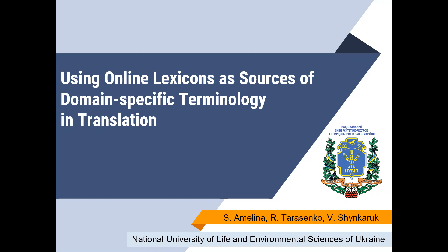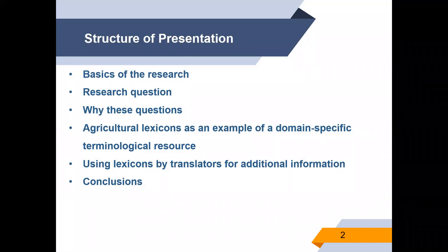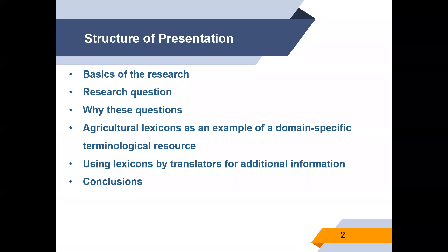The term lexicon comes from the ancient Greek for dictionary and is a reference book or dictionary in the broad sense. This term has sometimes previously been used synonymously with linguistic vocabulary. In the modern sense, a lexicon is mainly seen as a factual reference book. A distinction is made between a lexicon in the narrow sense and an encyclopedia depending on its volume. From a lexicographic perspective, a distinction is also made between a dictionary as a source of linguistic information and a lexicon as a collection of information.